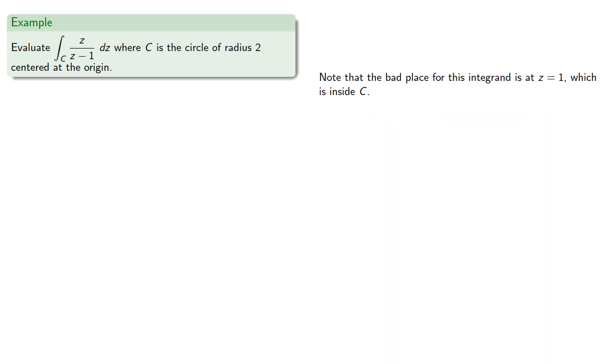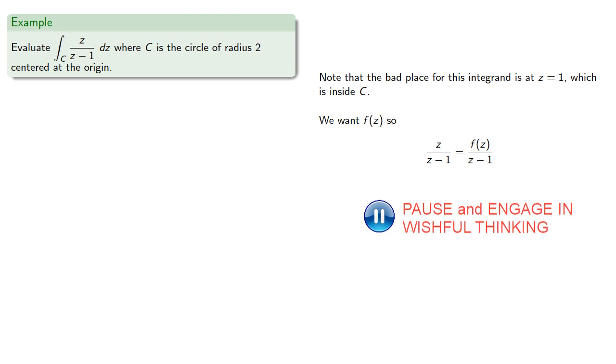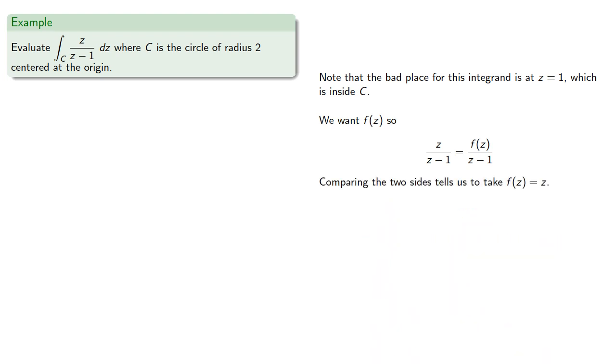So we want f of z so that our integrand is f of z over z minus 1. Comparing the two sides tells us to take f of z equal to z. We take f of z equal to z so f of z0 will be this integral. And if we want to take z0 to be 1, we can compute what f of 1 is equal to.